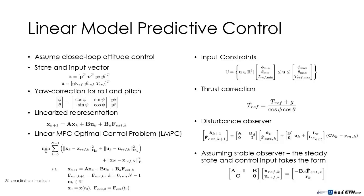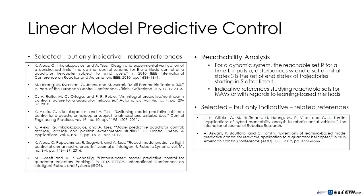Considering a closed-loop attitude subsystem, a multirotor linear MPC position control may be formulated as an optimal control problem over the prediction horizon N and subject to input constraints. A disturbance observer allows for offset-free tracking. Some selected, but necessarily only indicative references are presented below.